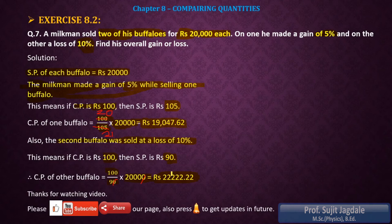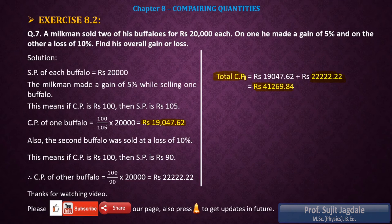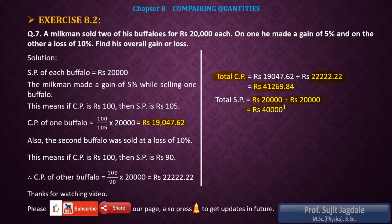Now we have both CPs. We combine them to find the total CP: 19,047.62 + 22,222.22 = Rs 41,269.84. The total SP is 20,000 + 20,000 = Rs 40,000, since each buffalo was sold for Rs 20,000.